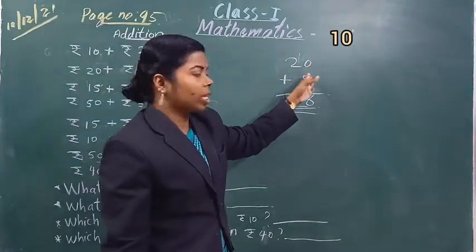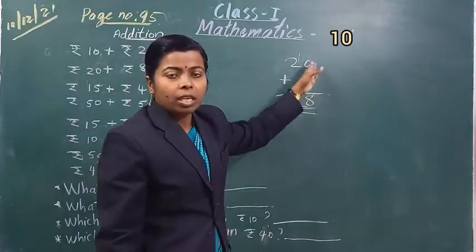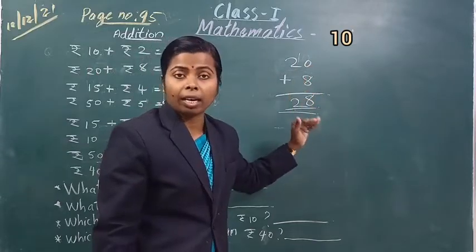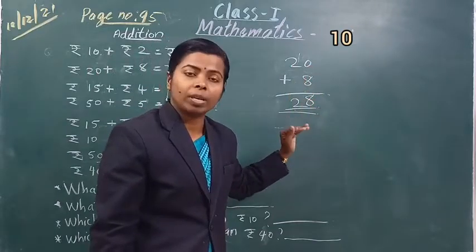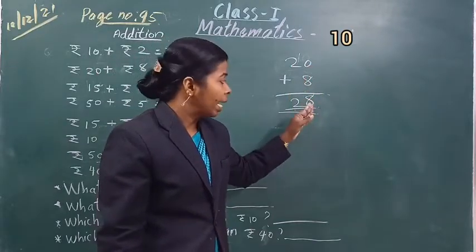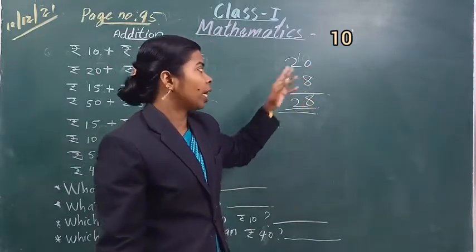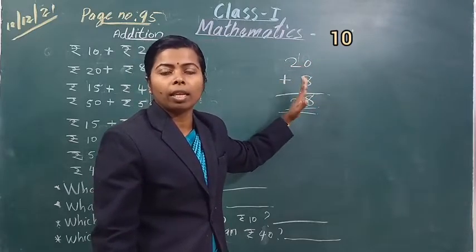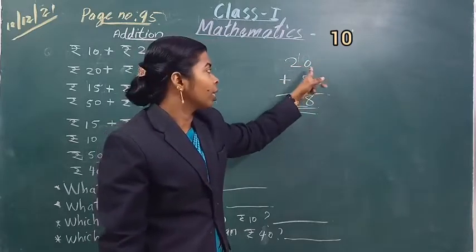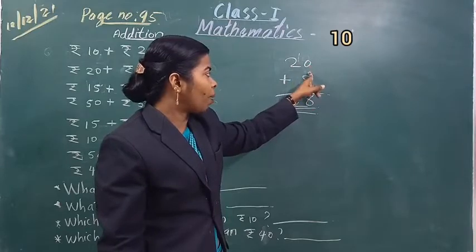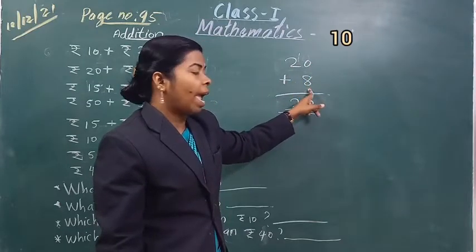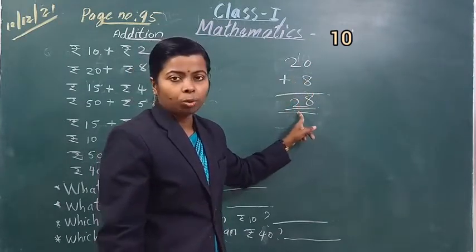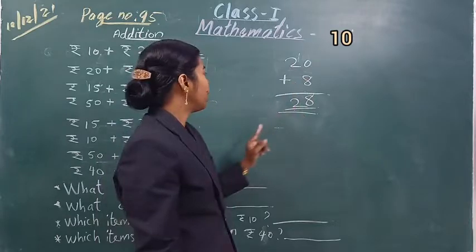देखो, 0 plus 8 — 0 के साथ 8 number add करना है, 8 मिल जाएगा. इदर 2 है, कुछ भी नहीं है नीचे, nothing. तो 0 plus 8 is 8, then 2. Answer is 28.